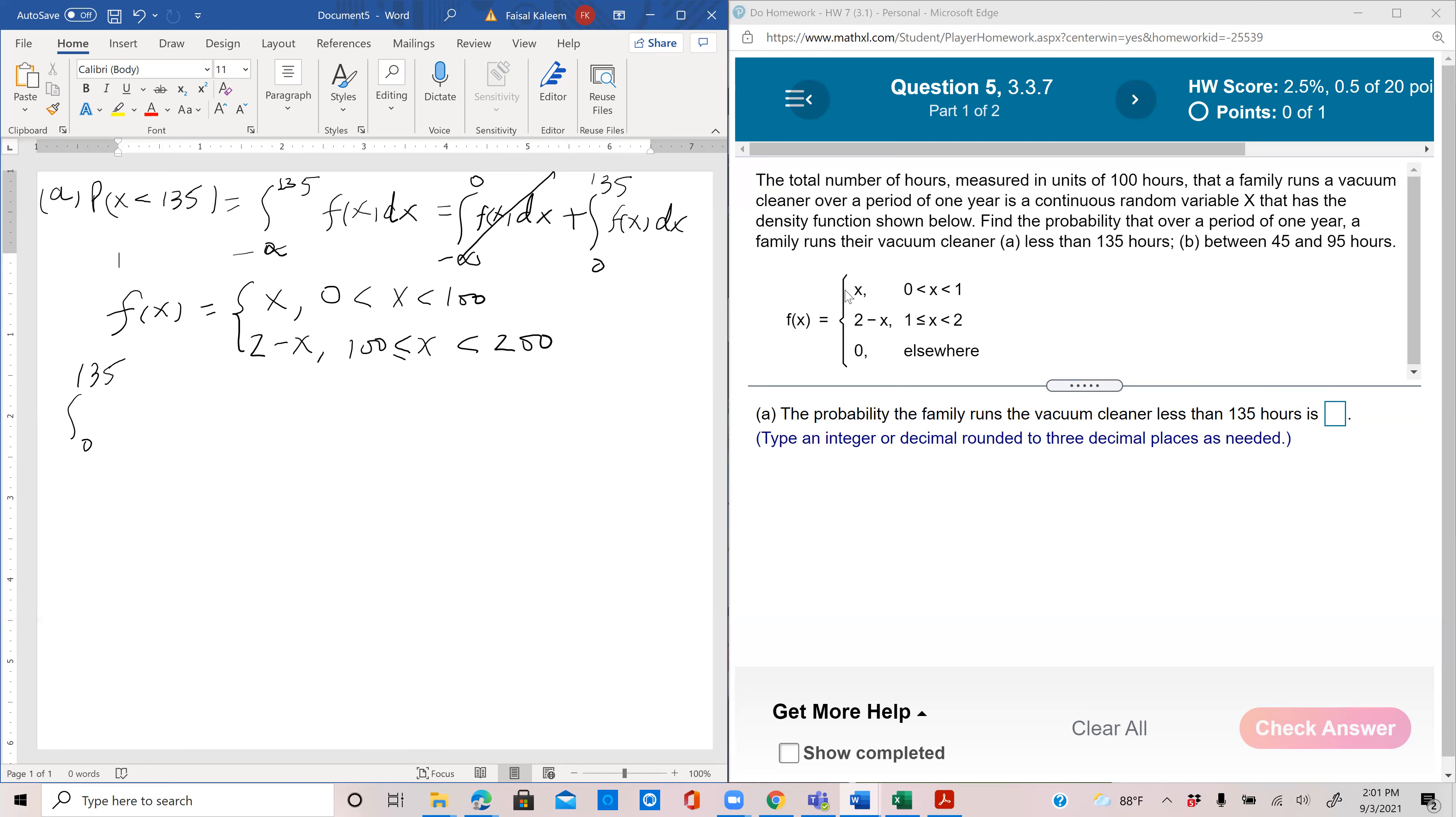What we will do is we will adjust this unit: x less than 1.35. When you're talking about less than 135 hours, you're talking about less than 1.35 hundred-hour units. So we will not do this, but rather 1.35.